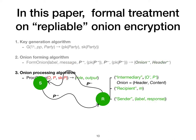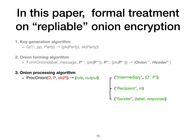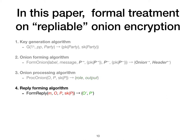The onion-processing algorithm ProcOnion takes as input the onion to be processed, the processing party and a secret key, and outputs a role and an output. If the role is intermediary, the output is the processed onion and next destination. If the role is recipient, the output is the message. If the role is sender, the output is a label and a reply message. The sender can use labels to determine which message the reply is a response for. Finally, there is a new type of algorithm, FormReply, for forming a reply onion. It takes as input the reply message, the onion it is replying to, the recipient and a secret key, and outputs a return onion and first destination for the return onion.